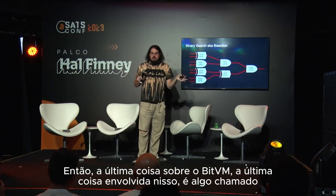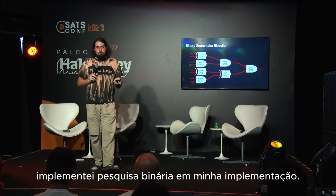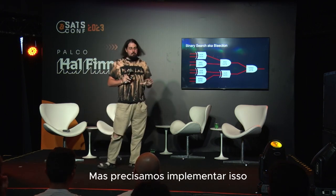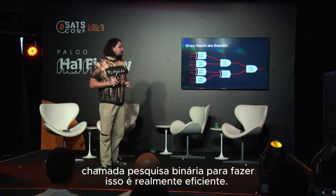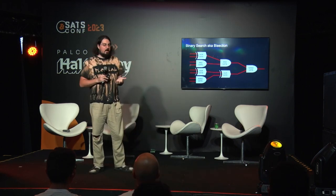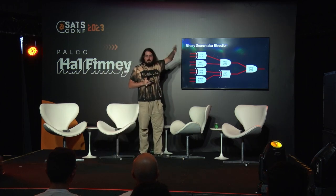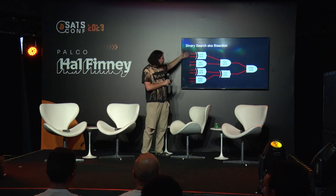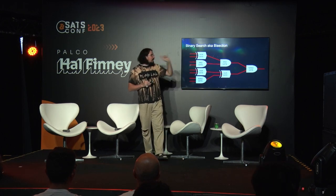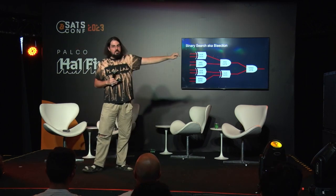The last thing involved in BitVM is something called binary search, or bisection — an efficient way to do a challenge-and-response game. I didn't implement binary search in my implementation — mine is much simpler than it needs to be. But we need to implement binary search to make this actually efficient. Suppose Paul says he's putting all zeros into the program and getting a one out. Vicky runs the same inputs and gets a zero — she has to figure out what part to challenge.